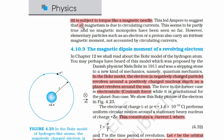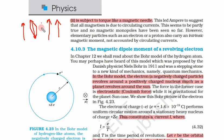The second property of this circular current loop is that it is subject to a torque like a magnetic needle. If this is the magnetic field and this is a magnetic needle placed in that field, it will try to rotate itself in the direction of the magnetic field. The net force will be zero, but there will be a torque.